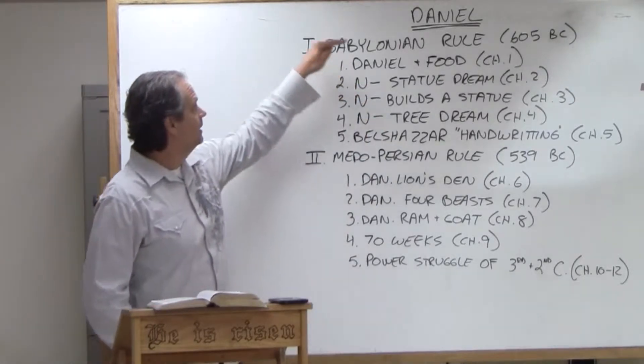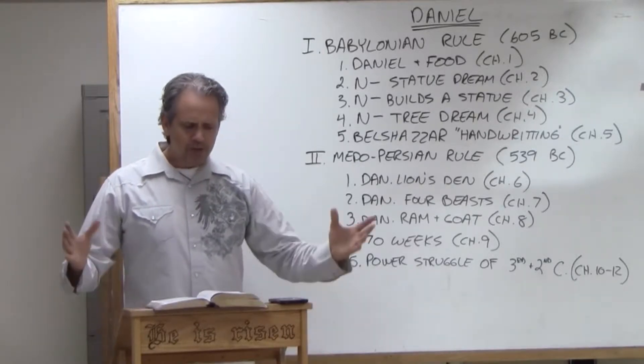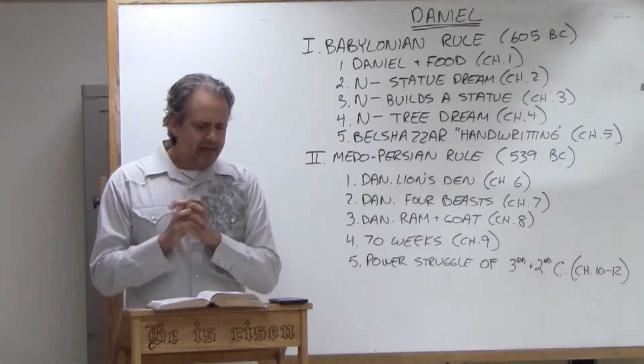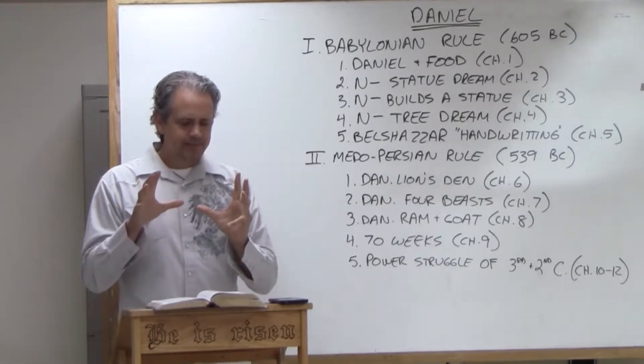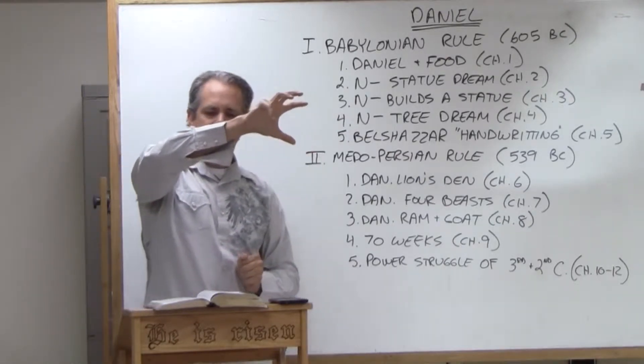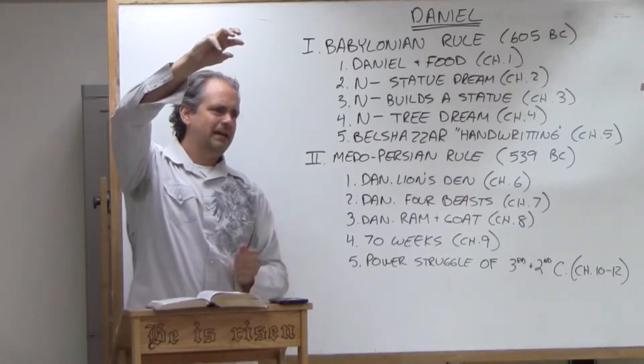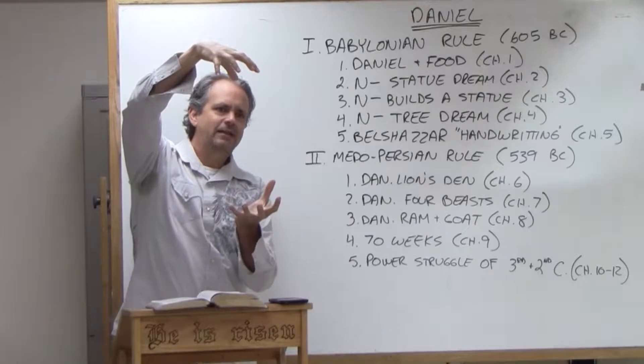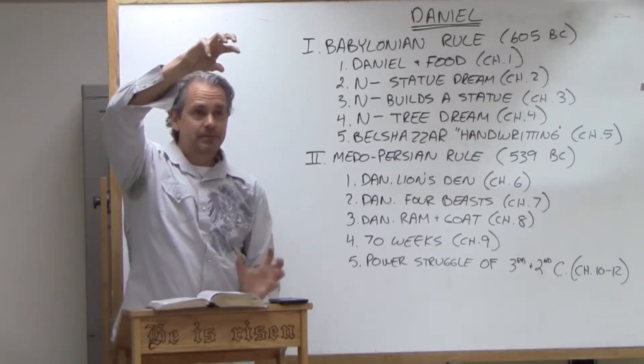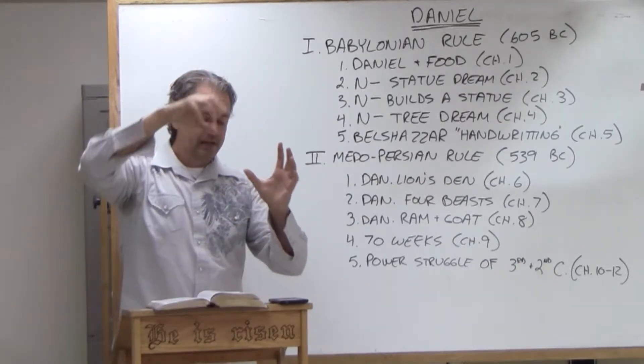Let me give you the background to get into the book of Daniel. You've got Medes and the Babylonians forming alliances, and they are fighting against Assyria. Assyria is losing, and so these kings from Assyria keep running away, and they end up at a place called Carchemish. Carchemish is way up at the top of Palestine.